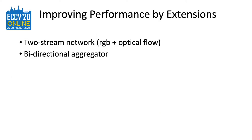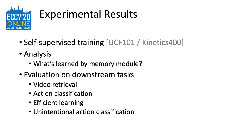Furthermore, we improve the representation quality with two extensions. The first is a classical two-stream network for videos, namely the original RGB stream and the optical flow stream. The second is a bi-directional temporal aggregator. The details can be found in our paper. The model is trained from scratch on UCF101 or Kinetics400 in a self-supervised way — without using any labels. Next, I will show a visualization of what is learned by the memory module and then evaluate the quality of the learned representations on four downstream tasks.